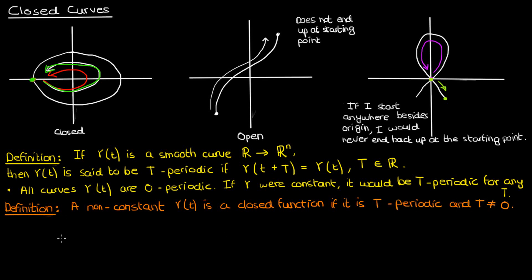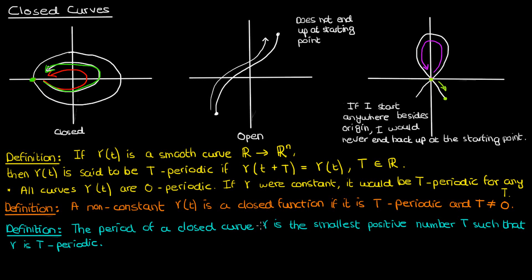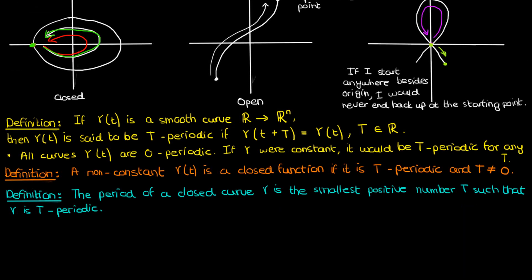Now this capital T that's used to call a function capital T periodic is kind of like a period of a periodic function, and this brings us to another definition of the period. The period of a closed curve gamma is the smallest positive number capital T such that gamma is capital T periodic. So if a function has a period of capital T, we can also call it 2T periodic. But the period is actually the smallest number at which we can call the function periodic. So the period would still just be capital T, even though the function can be 2 times capital T, 3 times capital T, 4 times capital T periodic, etc.